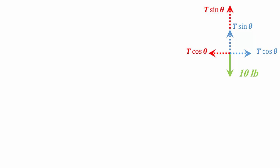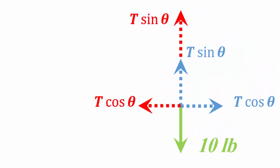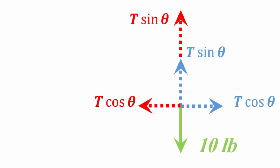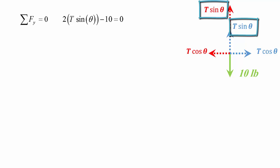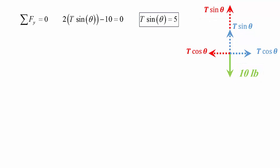This is a 2D problem, so we're limited to two equations of equilibrium. For summation of forces in x: T cosine theta minus T cosine theta equals zero — that doesn't help us. So we jump to summation of forces in y: two times T sine theta minus 10 pounds equals zero, which simplifies to T sine theta equals 5.